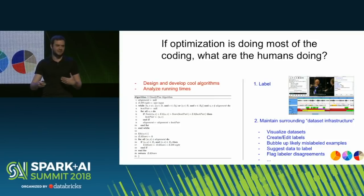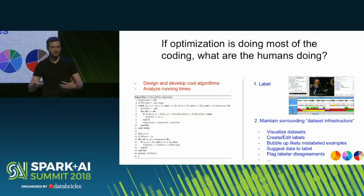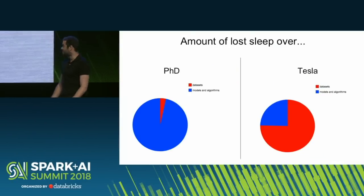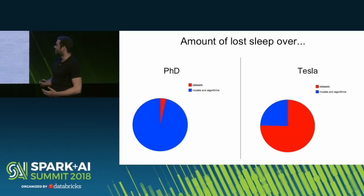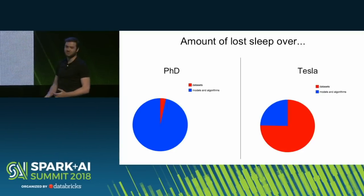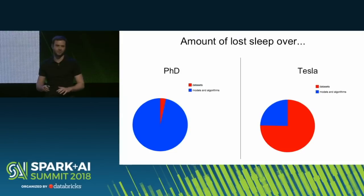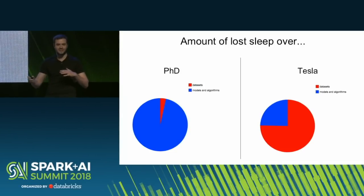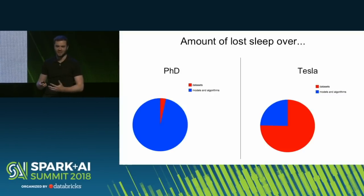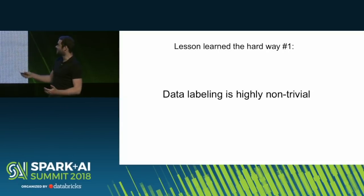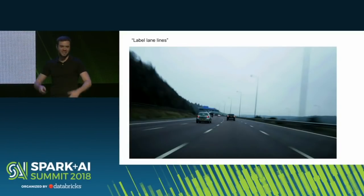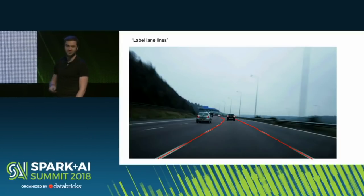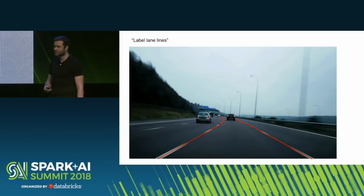My background is as a PhD student worrying about models, algorithms, and how to train networks. But at Tesla there's been a transformation — I spend most of my time just massaging the data sets. This takes a huge amount of work and effort. Even data labeling is highly non-trivial. You might think it's straightforward: there's a lane line there and there, stay in that lane. But then you go to the real world and find all kinds of craziness. In Europe there are zigzag markings — do you annotate the zigzag or go through? It's really not obvious.